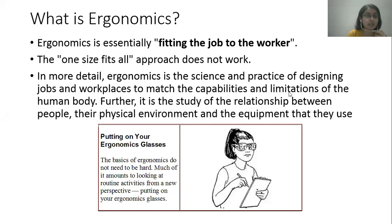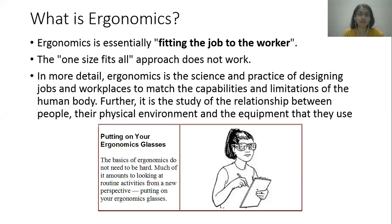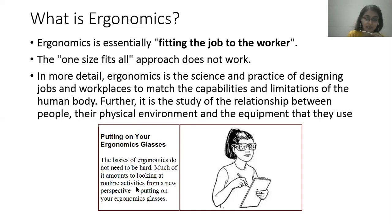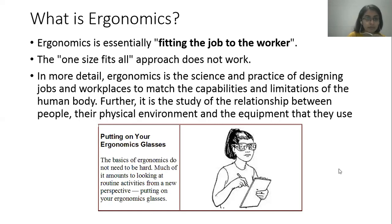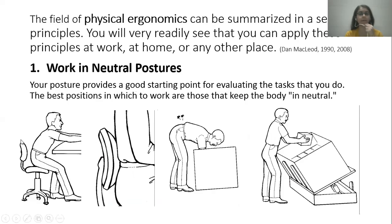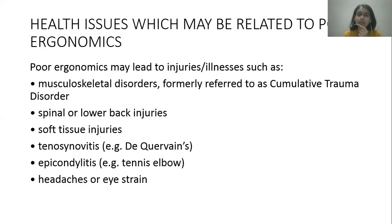In more detail, ergonomics is a science and practice of designing jobs and workplaces to match the capabilities and limitations of the human body. It is a relationship between the physical environment and the equipment that we are using. We can make changes in the environment to make things easier for us to work with.